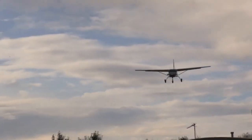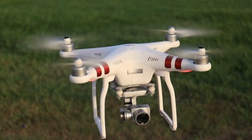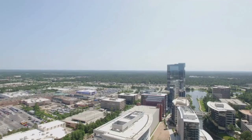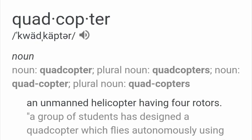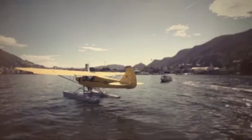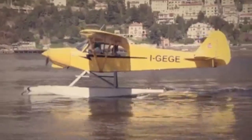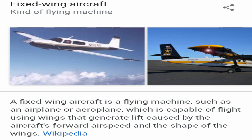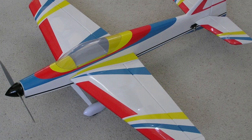Before we can compare the two, we first have to understand what is a quadcopter and what is a fixed-wing aircraft. For today's comparison we'll be using quadcopters, one of the most popular forms of a multi-rotor. A quadcopter is defined as an unmanned helicopter having four rotors. A fixed-wing aircraft is a flying machine such as an airplane which is capable of flying using wings that generate lift caused by the aircraft's forward airspeed and the shape of the wings.